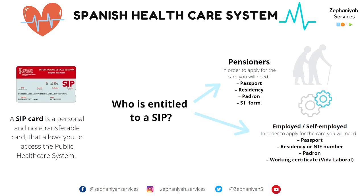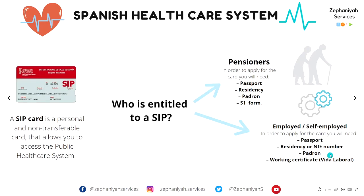Spanish healthcare system. A CIP card is a personal and non-transferable card that allows you to access the public healthcare system. And who is entitled to a CIP? If you're a pensioner and you want to apply, you'll need a passport, residency, padron, and an S1 form. Or if you are employed or self-employed, you'll need a passport, residency or NI number, a padron, and a working certificate, which is known as Vida Laboral.